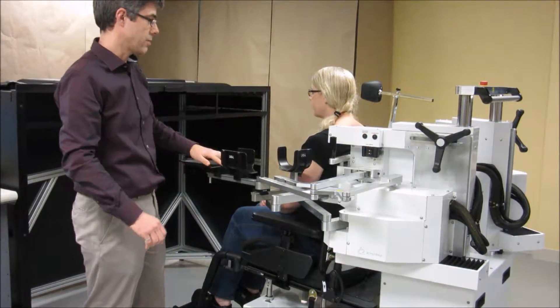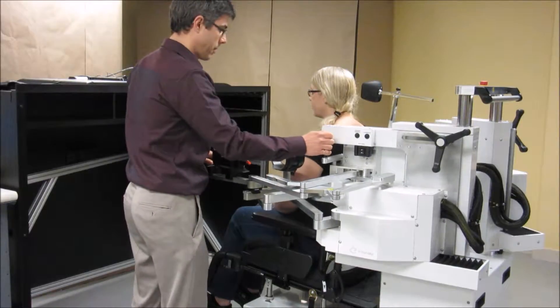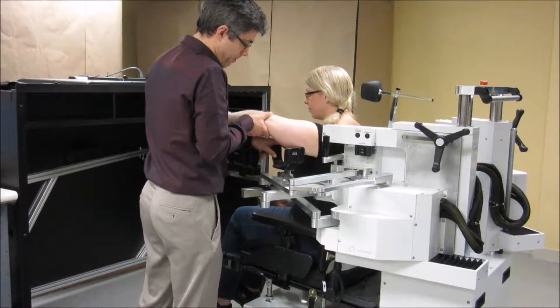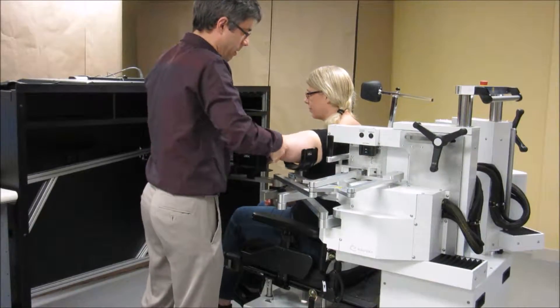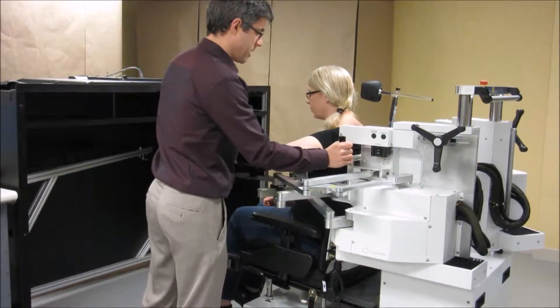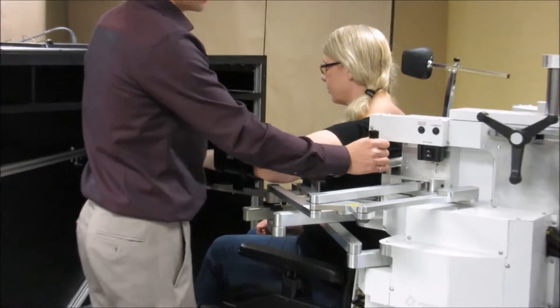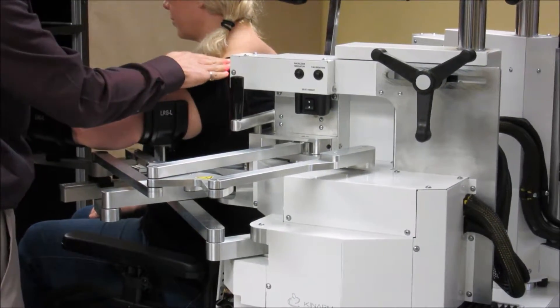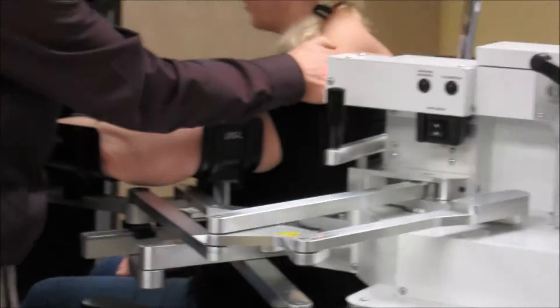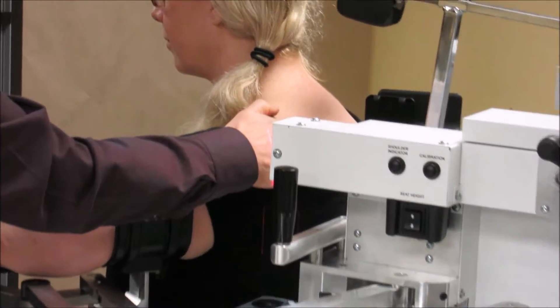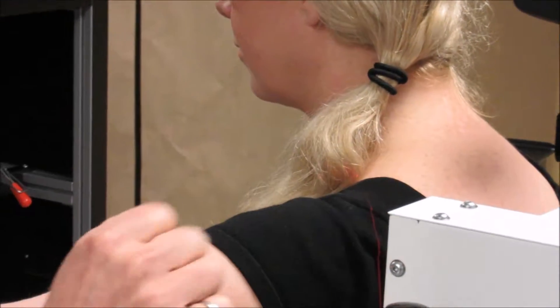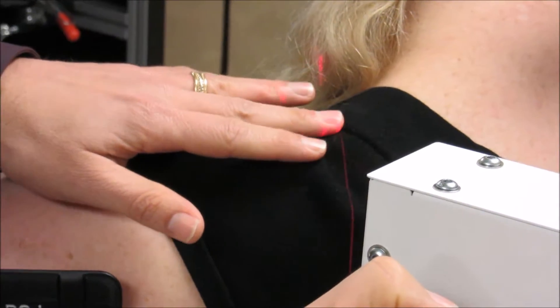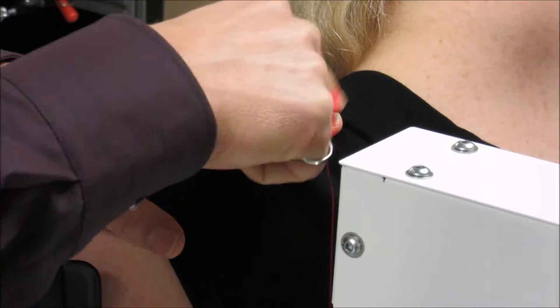Once you have them to approximately the right location, you can take their arm and then you can start to adjust the robot to the subject. If you push the shoulder indicator button, you will see the two lines come across and where those lines intersect is where the axis of rotation of the robot is.